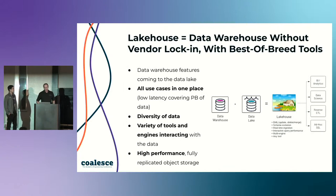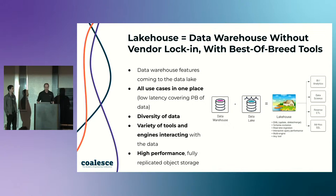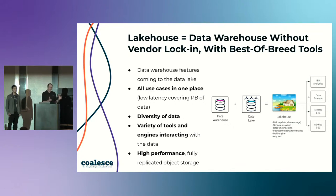So why a data lakehouse? We talk about taking some of those features you have in a data warehouse that were always lacking in a data lake and bringing those over to a data lake — that's where the term 'lakehouse' comes from. The big one is updated data. What really got the data lake folks was GDPR — not being able to delete or update user information in a data lake. That was a showstopper for a lot of companies. Table formats like Iceberg and Delta Lake bring that functionality into a data lake. Schema evolution is a big one as well.